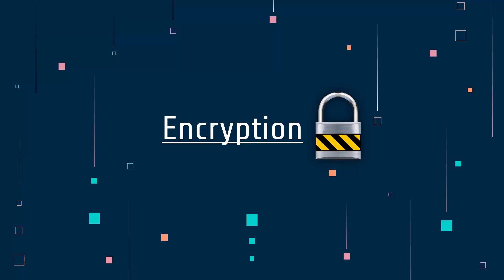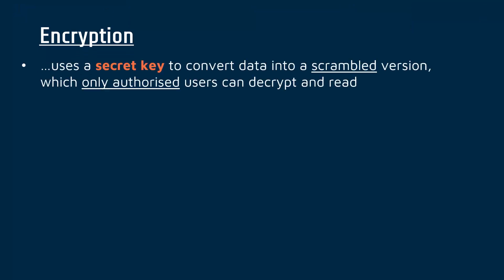We're going to look at encryption in this video, which is a really important data level protection measure we use in security, and often one which leads to misconceptions. Encryption as a concept is just where we are using a secret key and converting data into a scrambled version. This whole process works using really complex maths, which effectively means that only authorised users are able to decrypt and read this scrambled version because they've got access to this key. So the key should only be known by people who are authorised.